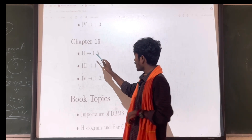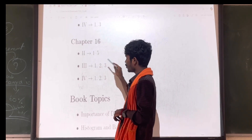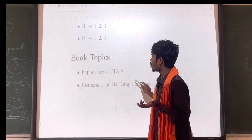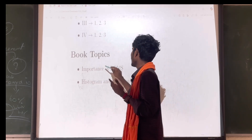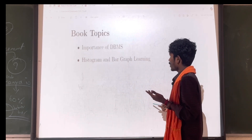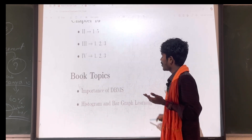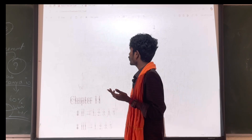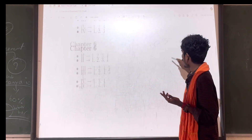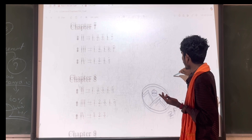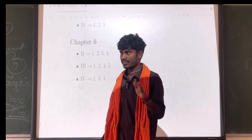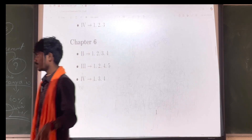Chapter 16: 2 mark questions — 1, 2, 3, 4, 5. 3 mark questions — 1, 2, 3. 5 mark questions — 1, 2, 3. Key topics include DBMS important questions, histogram and bar graph. These are the most important questions in computer science to get 70 out of 70 marks. Thank you.